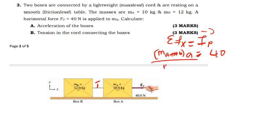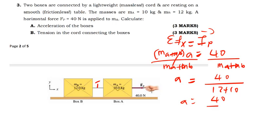Divide both sides by MA plus MB. This will cancel, acceleration will be equal to 40 divided by MA is 12, that one is 10. So we have 40 divided by 22.